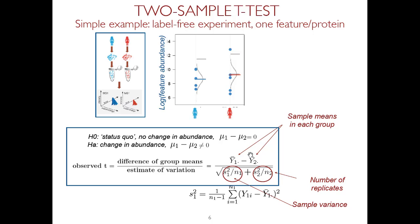At the bottom is the sample variance in group one — how much each point deviates from the group mean. The same can be written for group two. Because we have multiple replicates, we can quantify variation in each group. However, our signals are not individual points but the means of those points. So we need to characterize how much uncertainty we have in each group's mean. Taking the sample variance and dividing by the number of replicates characterizes the uncertainty in the mean; doing the same for group two characterizes the uncertainty in the mean of the second group.